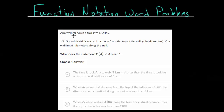So Aria walked down a trail into a valley. Maybe she's at the top of a ridge or a mountain and she walks down into a valley. Now V(D) models Aria's vertical distance from the top of the valley, and that's in kilometers, after walking D kilometers along the trail. We need to know what does the statement V(3) < 3 mean.